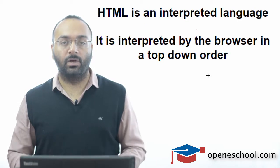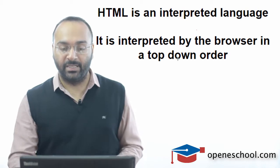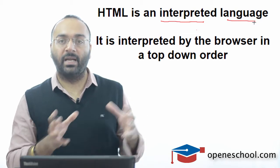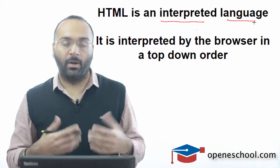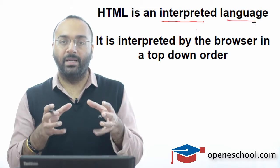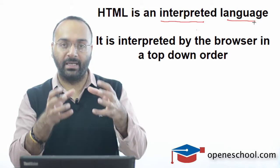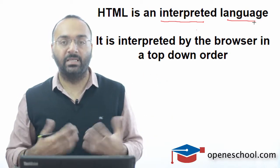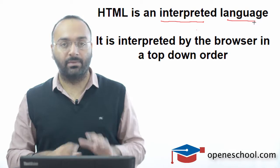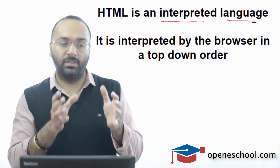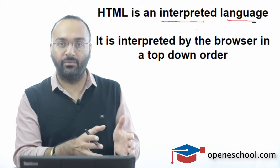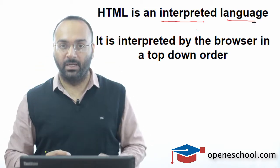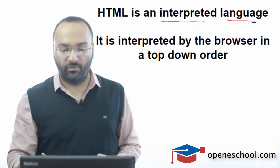The last concept I want to cover in this video is that HTML is an interpreted language. HTML is not like other programming languages like C, C++, Java, or C#, wherein we have a compiler which compiles the language and gives us an executable file that is then executed to see the result. HTML is an interpreted language — there is no compiler for HTML. All you have to do is write HTML code, save it in a file, and open it in a browser. The browser will read your HTML tags and process your page in a top-down manner.